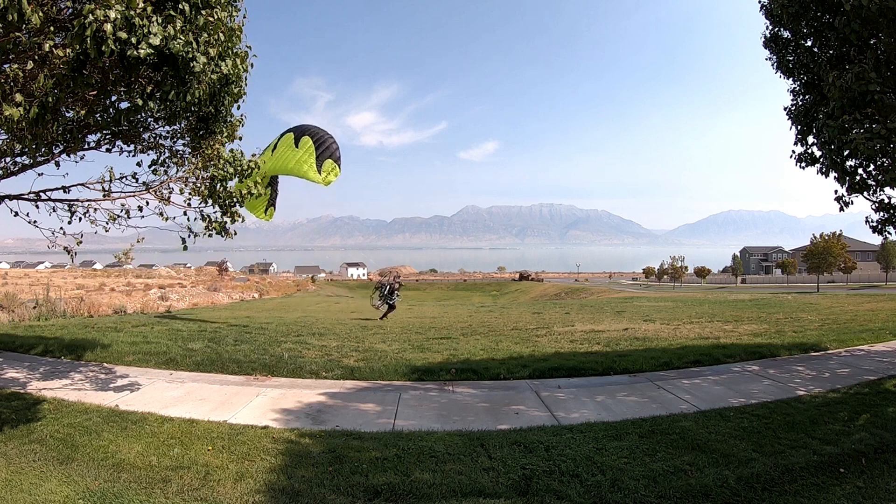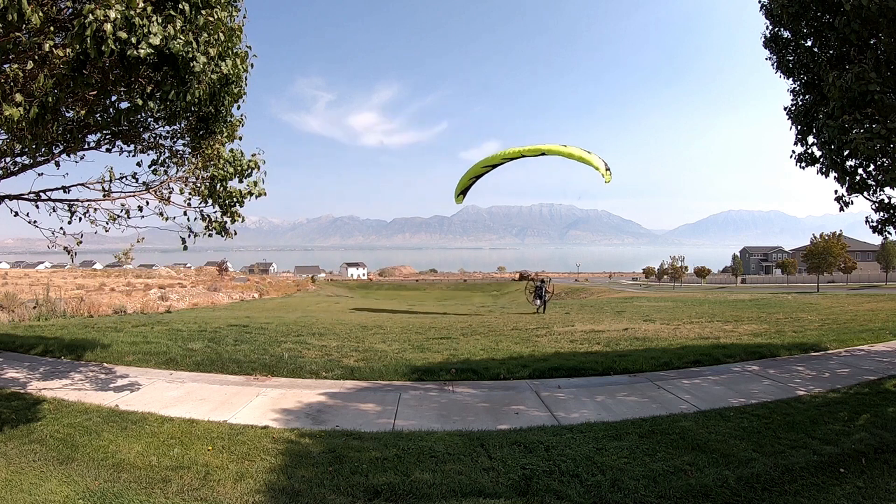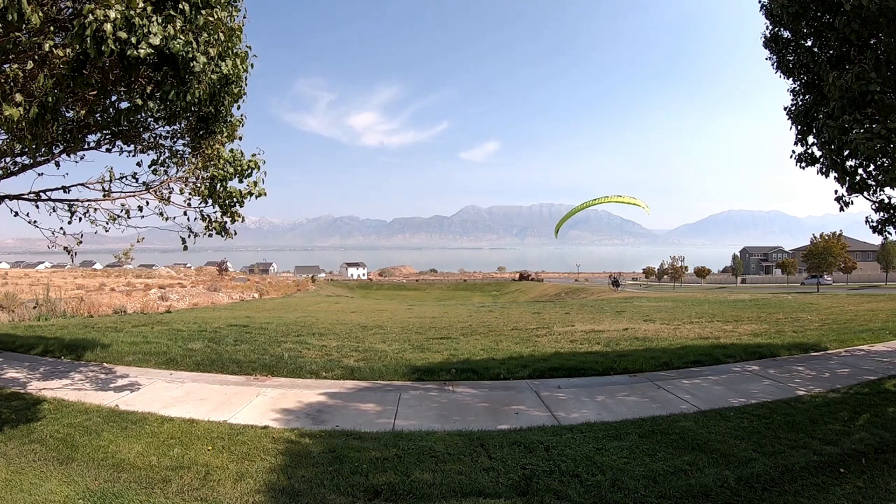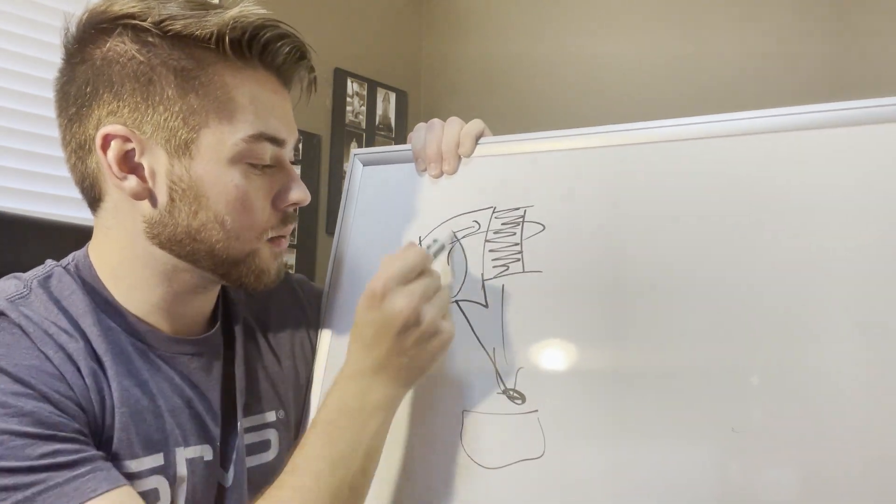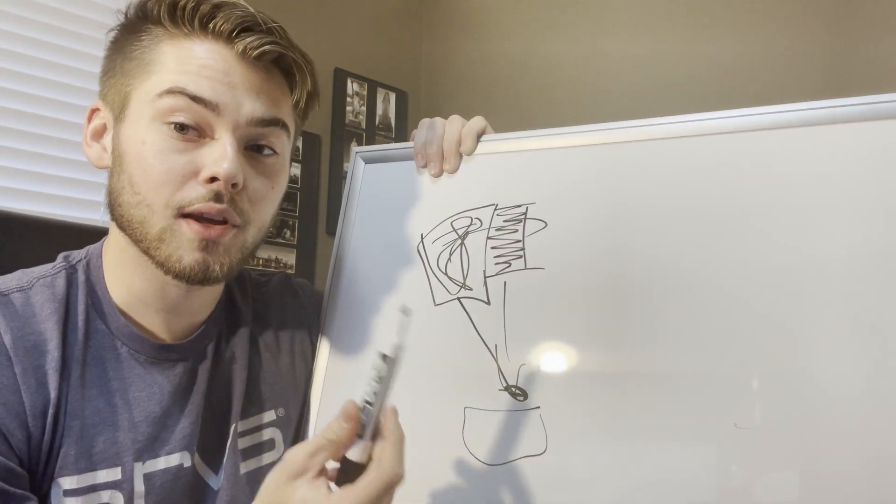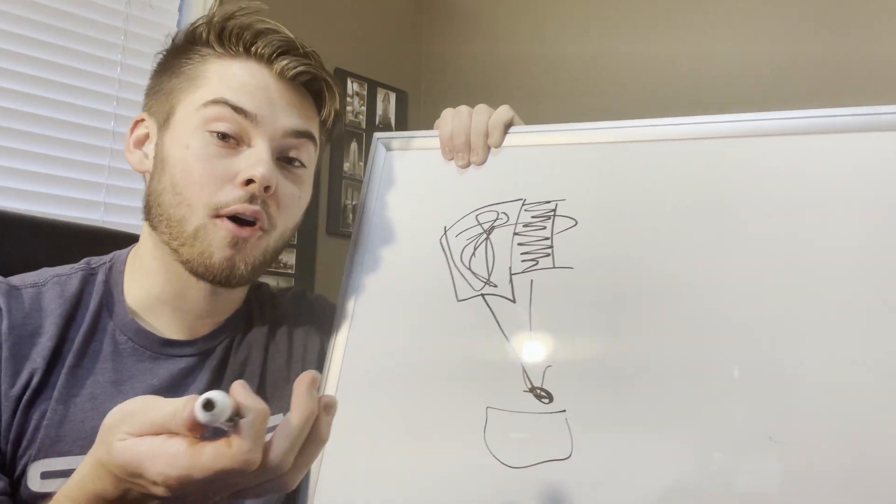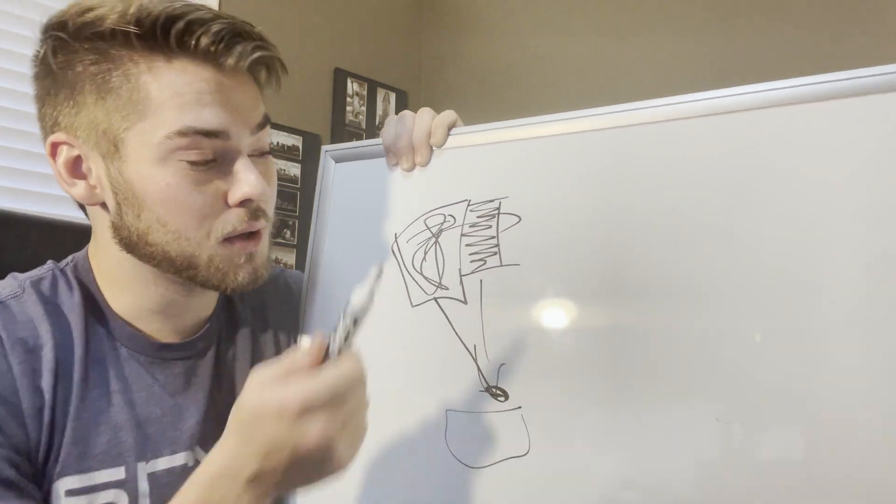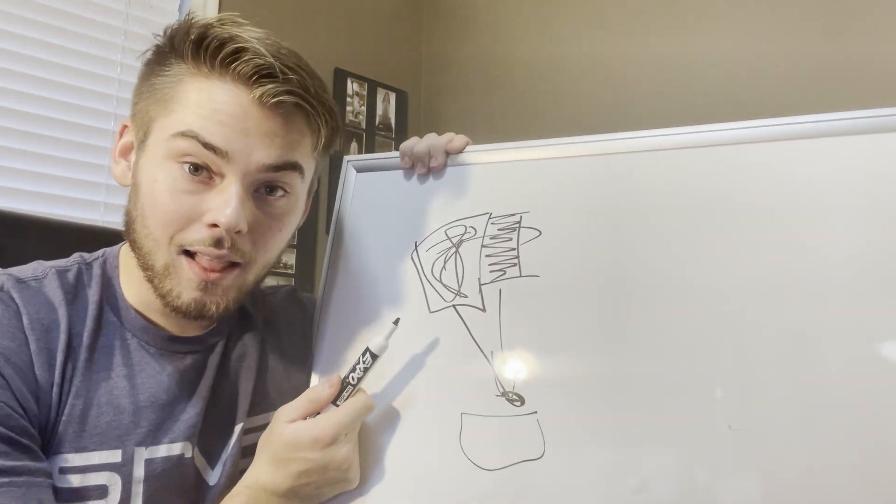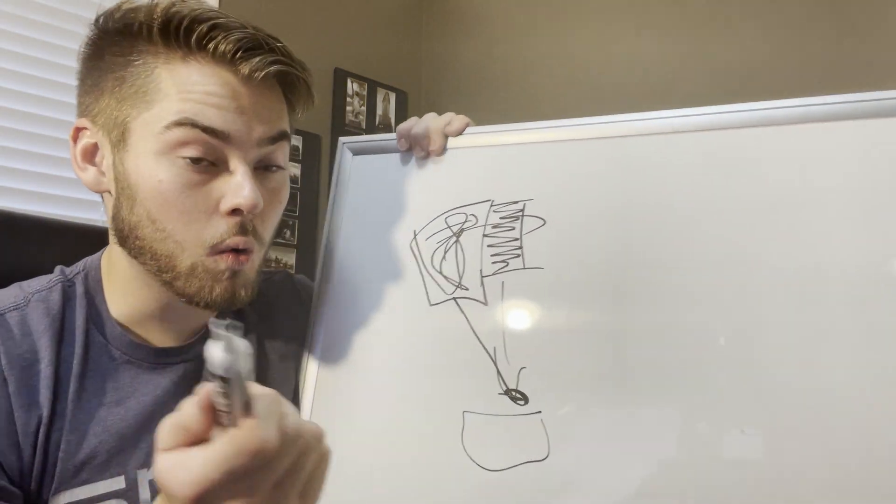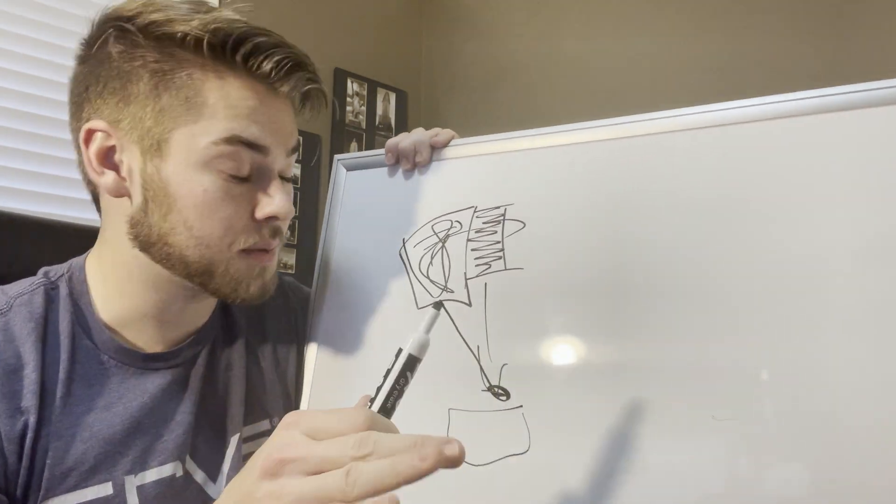This zone, which is behind the pilot ever so slightly, is where the most lift is produced. If you keep the glider within this zone right here, you can launch faster. You don't have to worry about running with all of the weight on your back like you do if it shoots forward and overflies you. You don't have to worry about it collapsing in on you and breaking lines or shredding the entire glider, which is absolutely no fun.